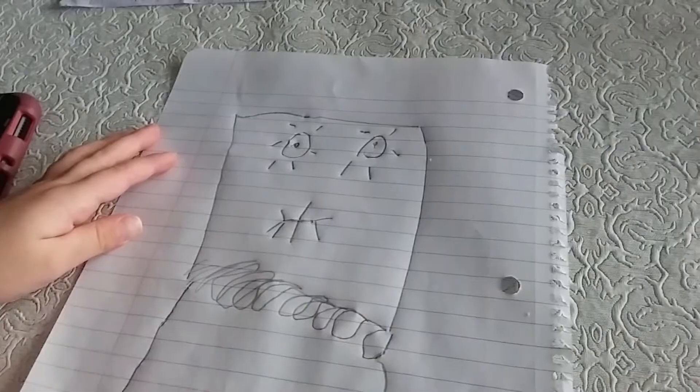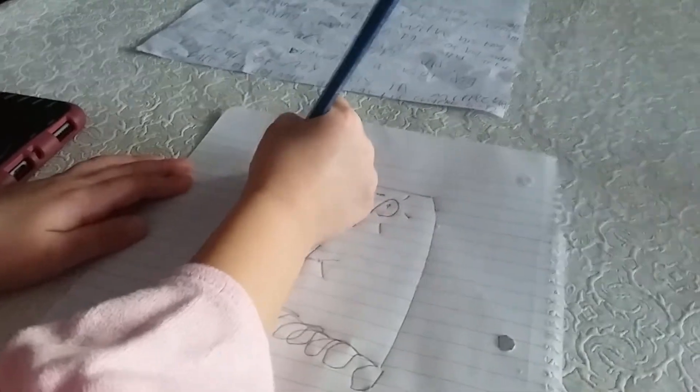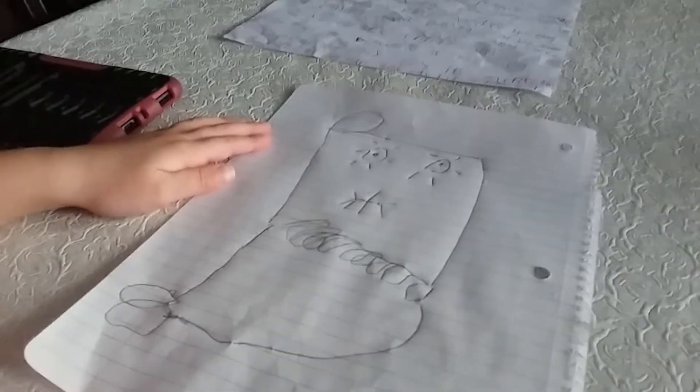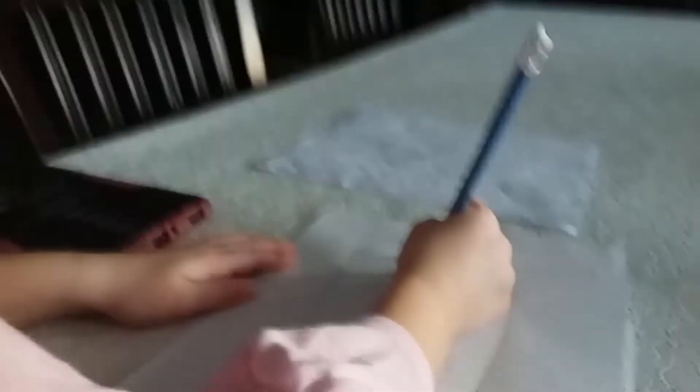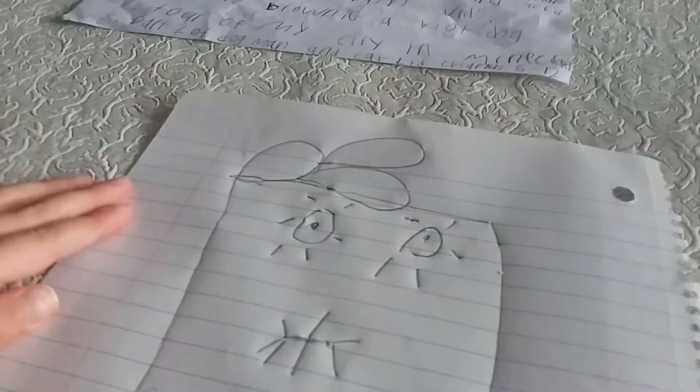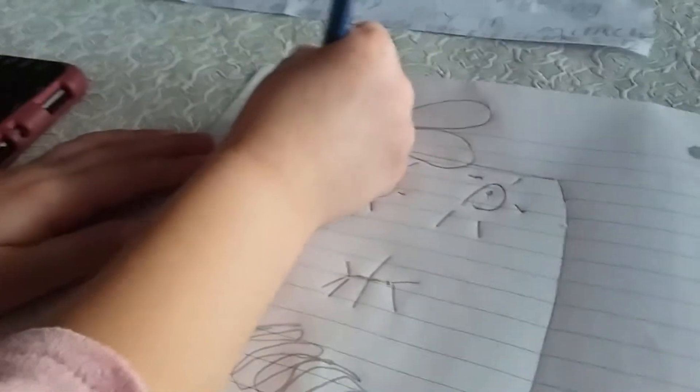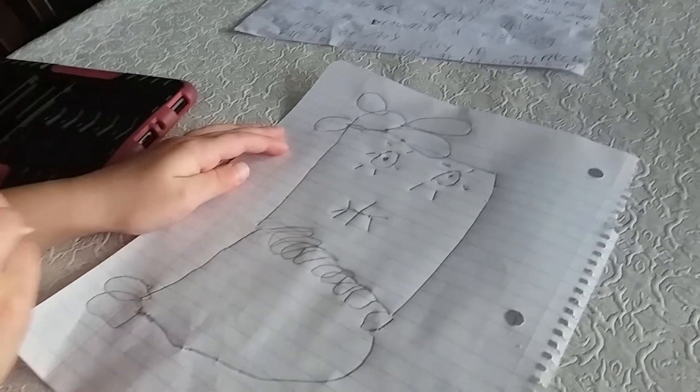So now you want to do its hair. You are going to do this as the first layer. Okay, now you want to do this and do another one up top, and then like this, and then like this, and then like this. And that's his little hair.